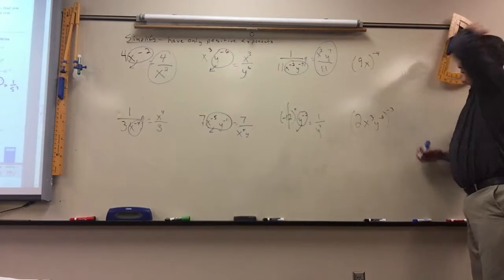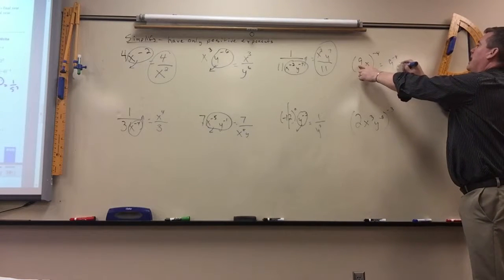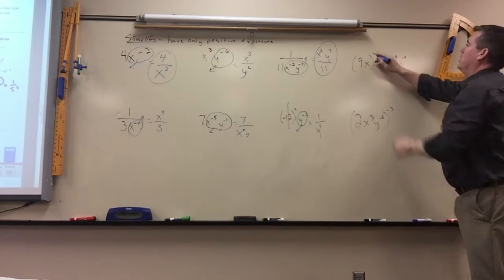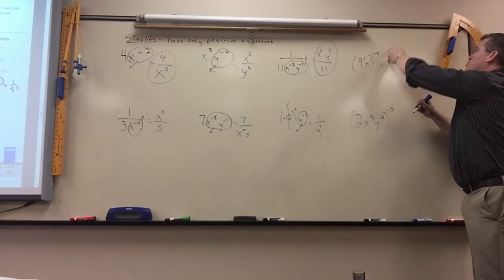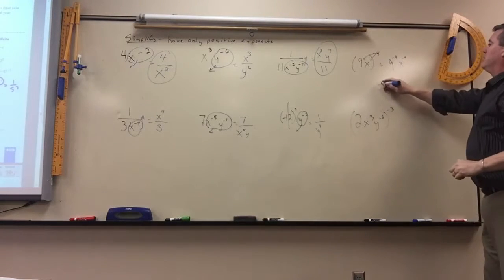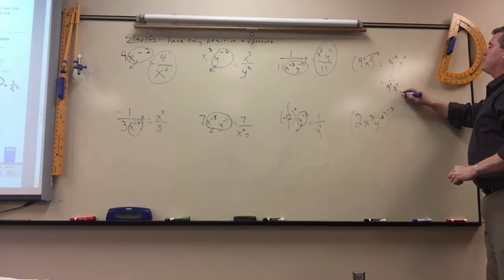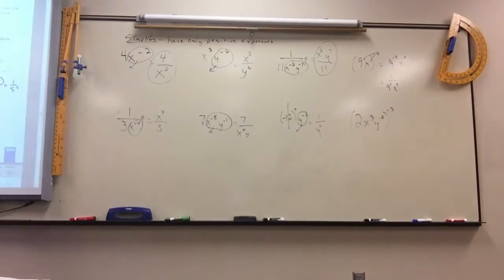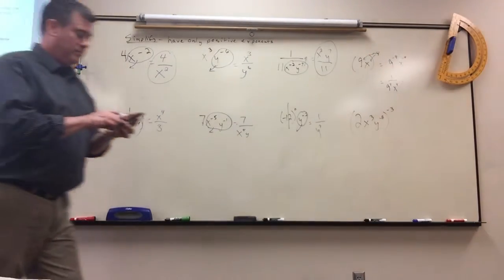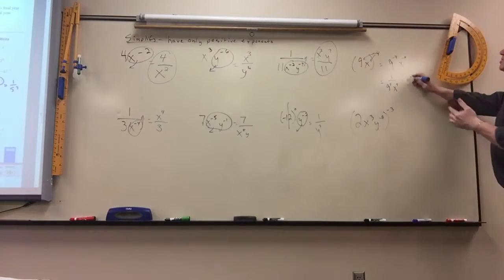Here, we have to simplify. This would be 9 to the negative 4th, x to the negative 4th, because you have to do everything in the parentheses. So they both have to go underneath. It would be 1 over 9 to the positive 4th, x to the positive 4th. And 9 to the 4th is 6,561.